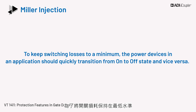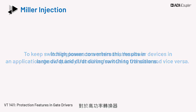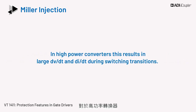To keep switching losses to a minimum, the power devices in an application should quickly transition from the on to the off state and vice versa. In high power converters, this results in large DV/DT and DI/DT during switching transitions.